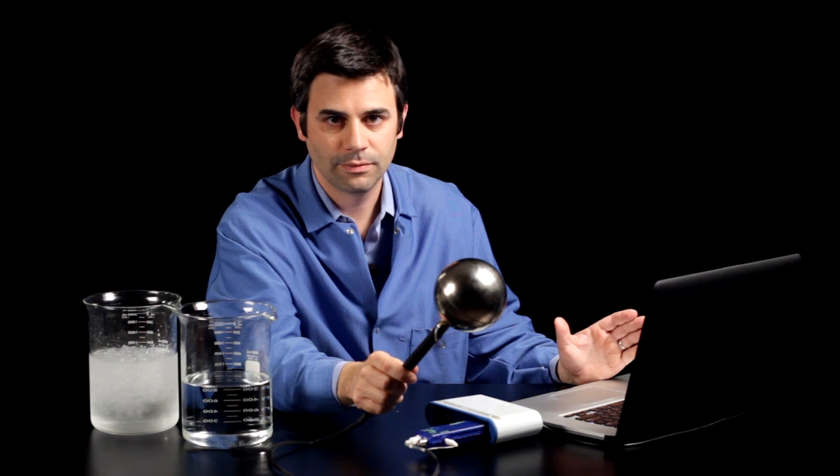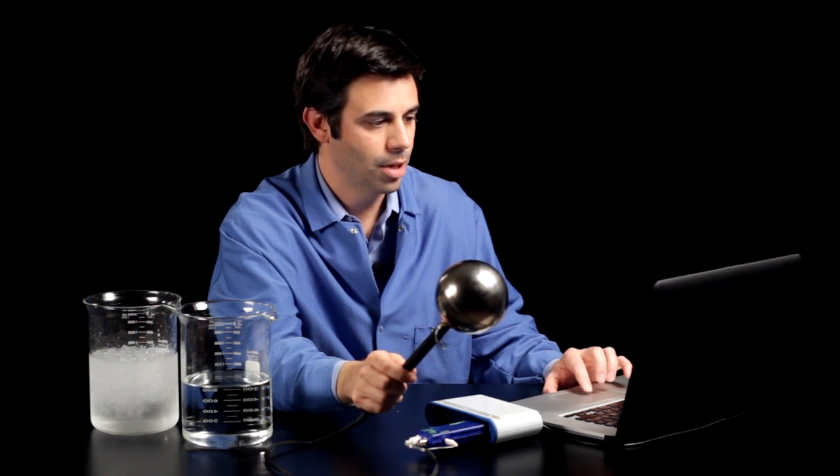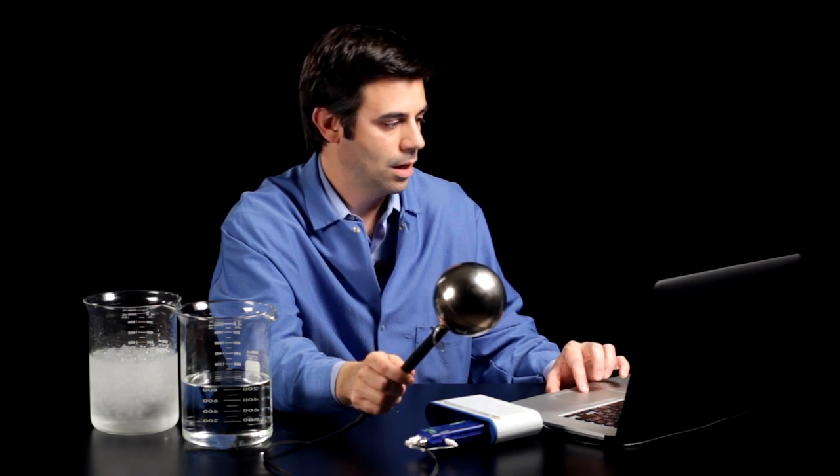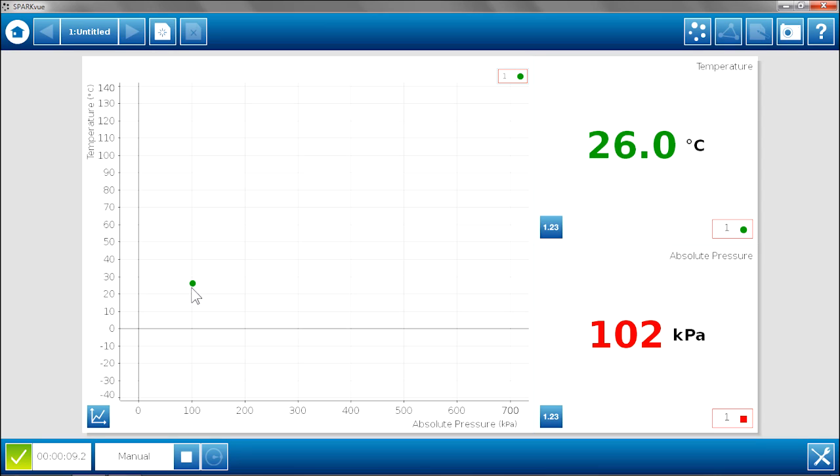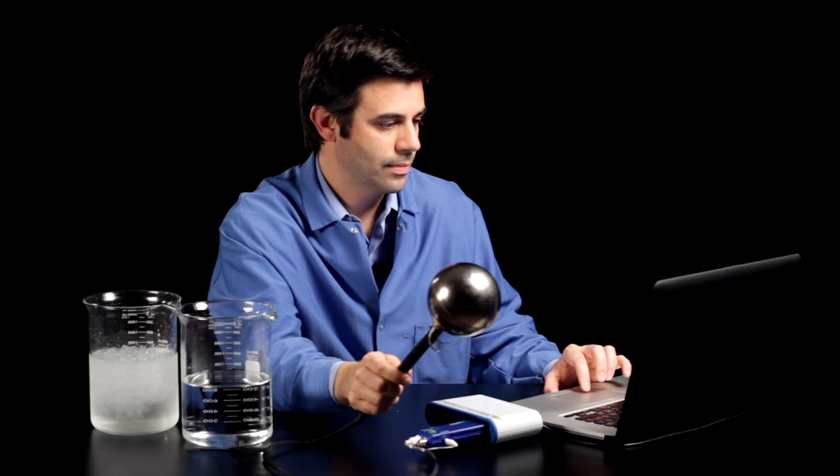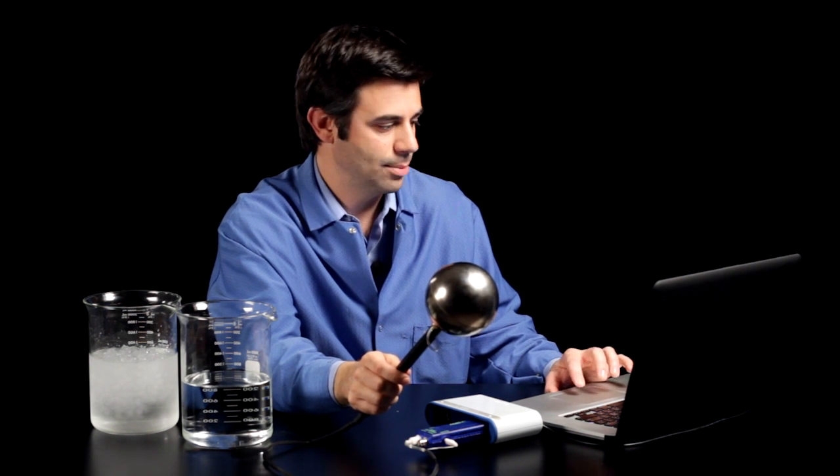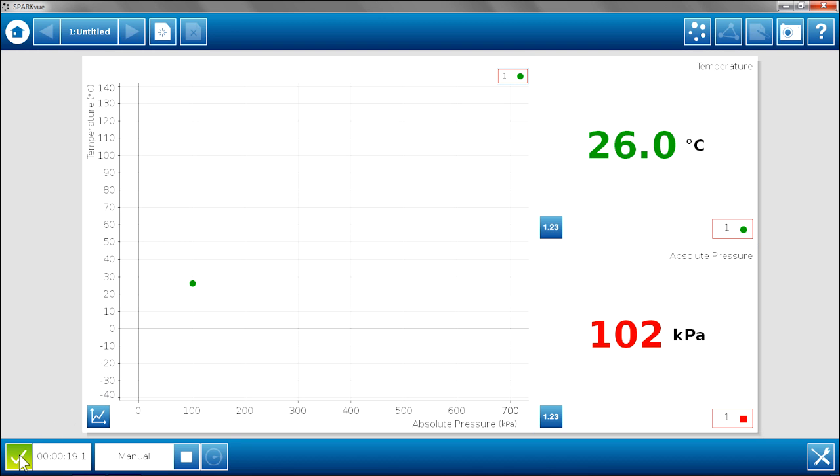I am just going to leave this in the room and monitor the temperature and pressure to make sure that they are stable. I can also look at the little dot over here to make sure that it is not moving around too much on the graph. It looks like we have a pretty stable condition right now. I am going to hit Keep to save that point.